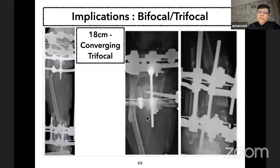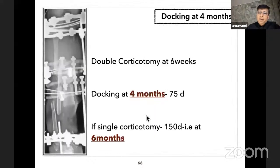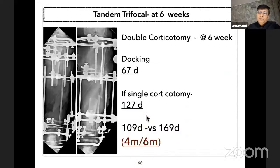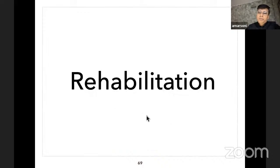Sometimes such patients come from far away for limb salvage. This patient was from South Africa with an 18 centimeter gap. Because of double corticotomy, I could discharge the patient from India at four months. If I had done a single corticotomy, the patient would have had to stay an additional two months—six months in India. Another similar case was also discharged at four months instead of the six months that a single corticotomy would have required.